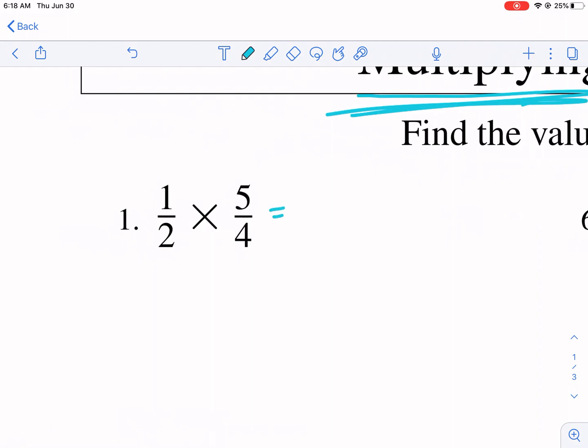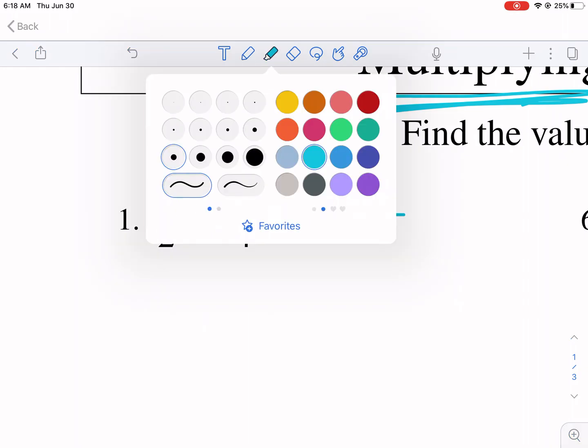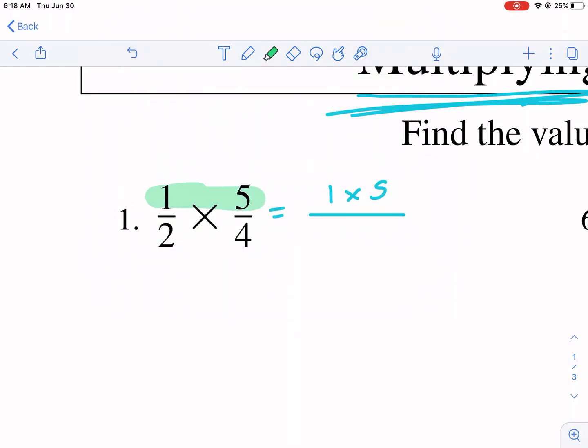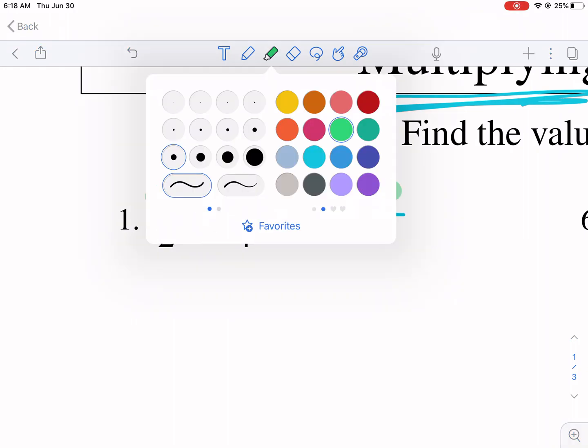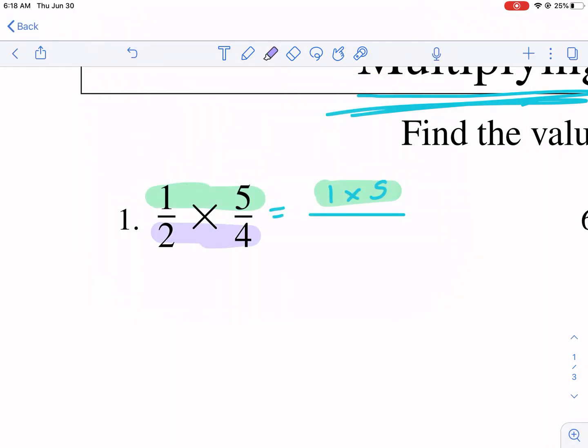Let me show you how it works with number one. So number one, we have one-half times five-fourths. What we're going to do is simply multiply the numerators. That's the top part of this expression. So the top part, that's the numerator, and then we're going to multiply that by the denominator. That's the bottom part. So we have two times four in the bottom. Another way to say it is top times top, bottom times bottom.